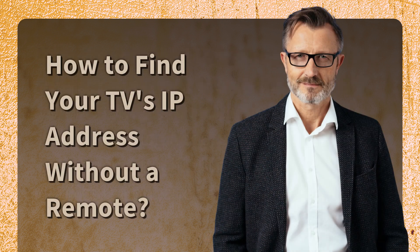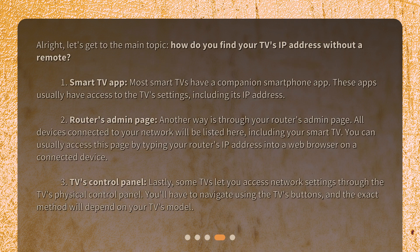Alright, let's get to the main topic — how do you find your TV's IP address without a remote? Method 1: Smart TV app. Most smart TVs have a companion smartphone app. These apps usually have access to the TV's settings, including its IP address.